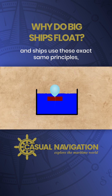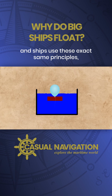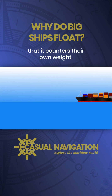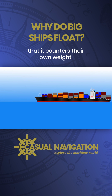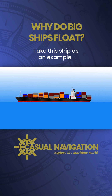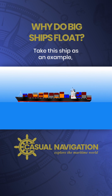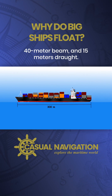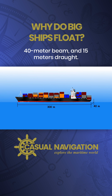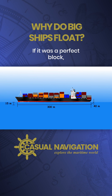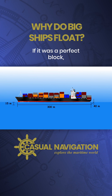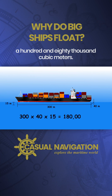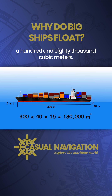Ships use these exact same principles — they just need to displace enough water to counter their own weight. Take this ship as an example. Its rough dimensions are 300 meters in length, 40 meter beam, and 15 meters draft. If it was a perfect block, it would have a volume of 180,000 cubic meters.